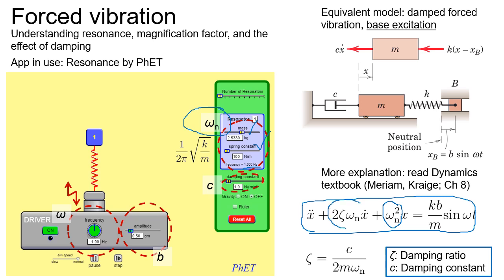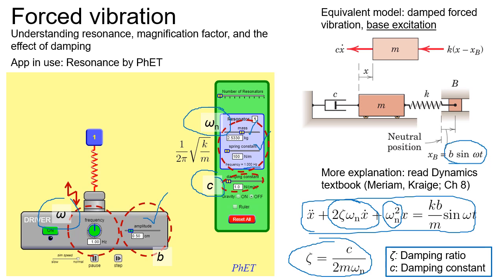The next term comes from damping — the damping constant or damping coefficient c. The relationship between c and the damping ratio zeta is given by a specific equation. Secondly, the driver or shaker also has a driving frequency, and we can set its value as well as its amplitude B, where the driving displacement is of the form B·sin(ωt).